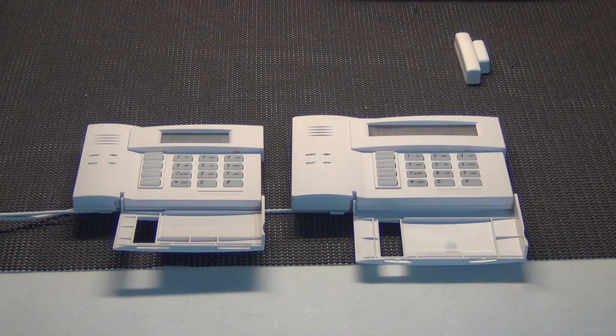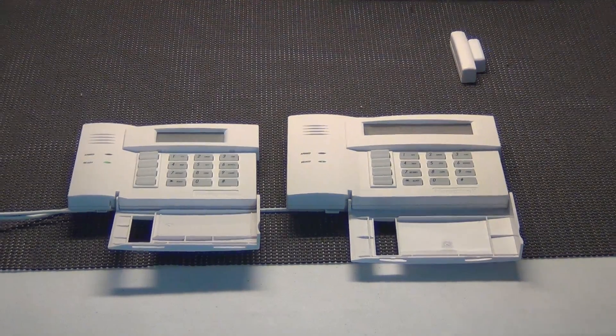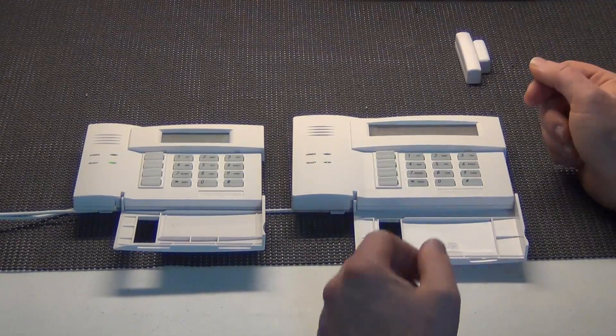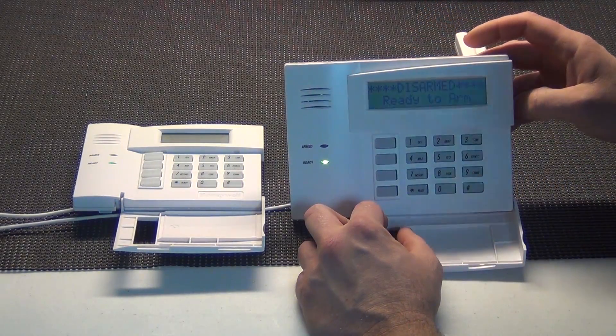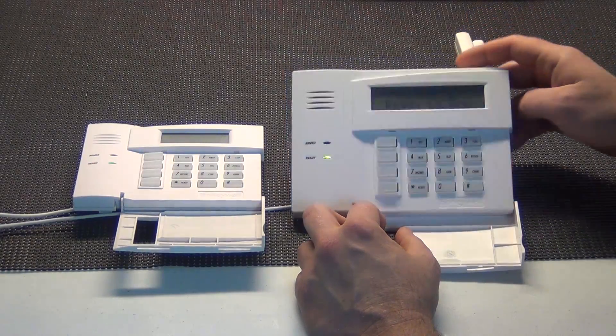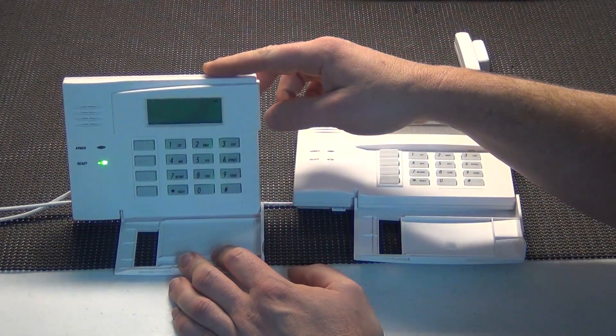Alright, so here we are at the table with our two different versions of the 6100 series, the older versions of 6160 right here, which is an alphanumeric display, and the 6150 right here, which is a fixed English keypad.